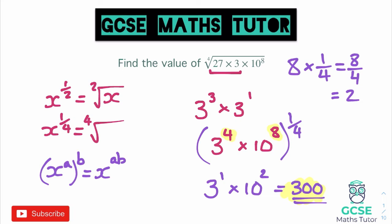There was a lot going on there, so let's have a quick recap. First, we collected together those numbers with the same base number — we turned 27 into 3 cubed, then added the powers to get 3 to the power of 4. We then thought about the fourth root as raising to the power of a quarter, and how that affected the powers when multiplying out the brackets. The power of 4 was quartered to become 1, and the power of 8 was quartered to become 2, giving us 3 times 10 squared.